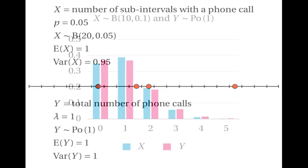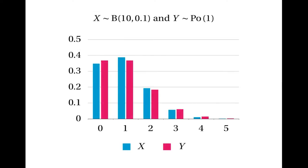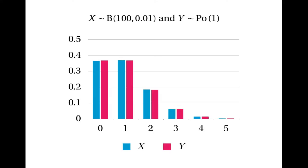We can see that the distributions are more similar by looking at the graph. This is the graph we had earlier, and you can see that when we change from the binomial distribution with parameters 10 and 0.1 to the binomial distribution with parameters 20 and 0.05, the bars are more nearly equal in height. In general, when we increase the number of sub-intervals, we eliminate more and more cases where more than one event happens in the same interval. So as we increase the number of sub-intervals, x and y must be equal more and more often, and their distributions should be more and more nearly equal. As we increase the number of sub-intervals from 20 to 100, the probabilities become very, very similar: the binomial distribution with parameters 100 and 0.01 is very similar to the Poisson distribution with parameter 1.